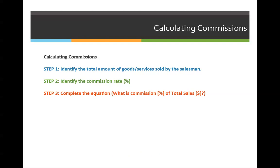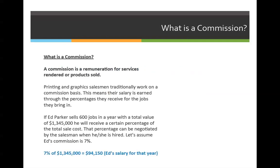We can break this down into a step-by-step process. Step one is to identify the total amount of goods or services sold by the salesman. In the example on the previous slide, Ed sold $1,345,000 for the entire year. You want to make sure you're matching apples to apples — if the question asks how much commission he earned in one year, the total sales must also represent one year. If it's asking how much he'll make in one month, you can't use the yearly total directly.